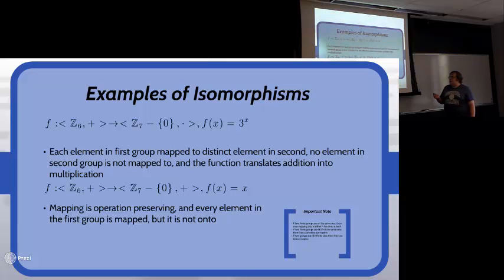A non-example would be Z6 under addition to Z7 under addition, where f(x) = x. It is one-to-one and operation preserving, but it's not onto because nothing will ever translate to the element 6 in Z7.